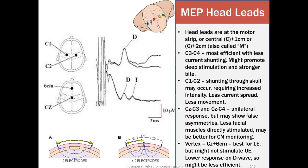MEP headleads. Headleads are at the motor strip or the central C plus 1 centimeter or C plus 2 centimeters, also called M. That's how I personally notate my MEP leads electrodes. I call it M1, M2, or M3, M4. But it's sometimes used as the same thing, but if you call it C3C4, that should be a little bit posterior placement than an M1, M2, M3, M4.